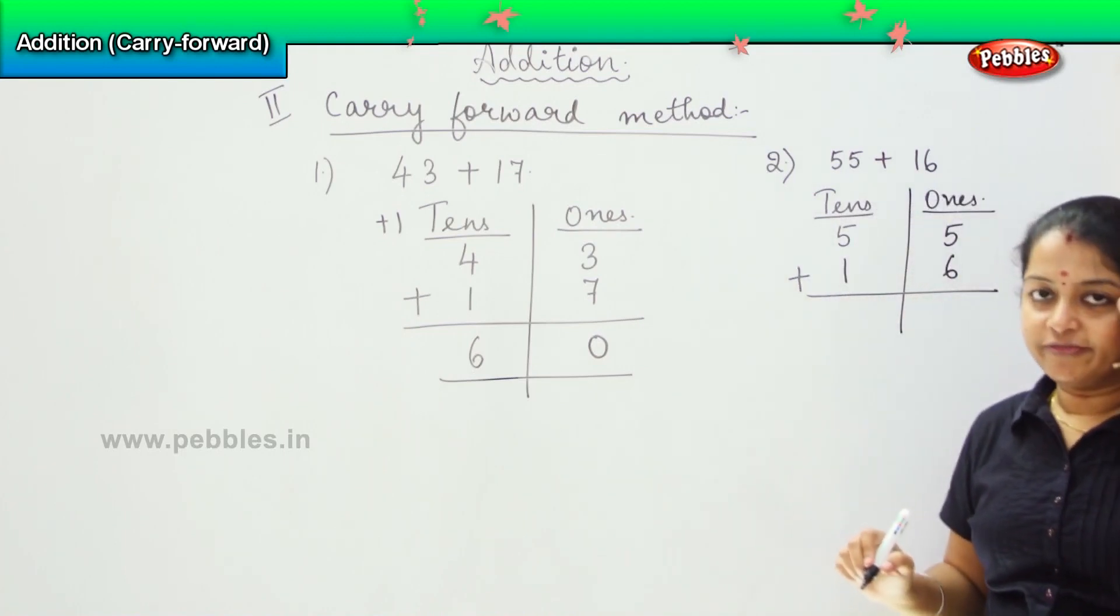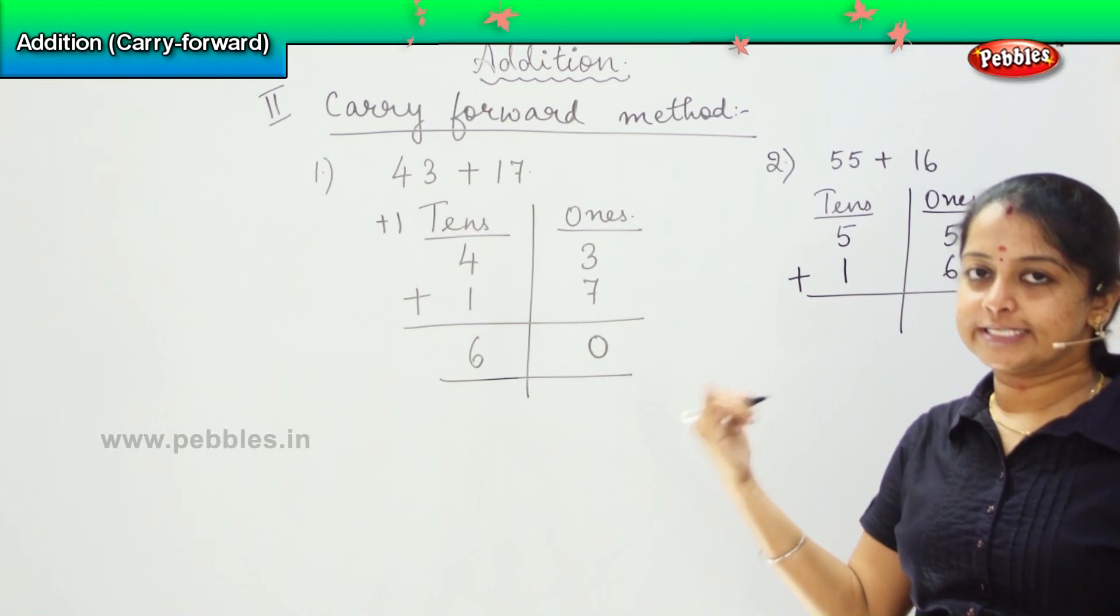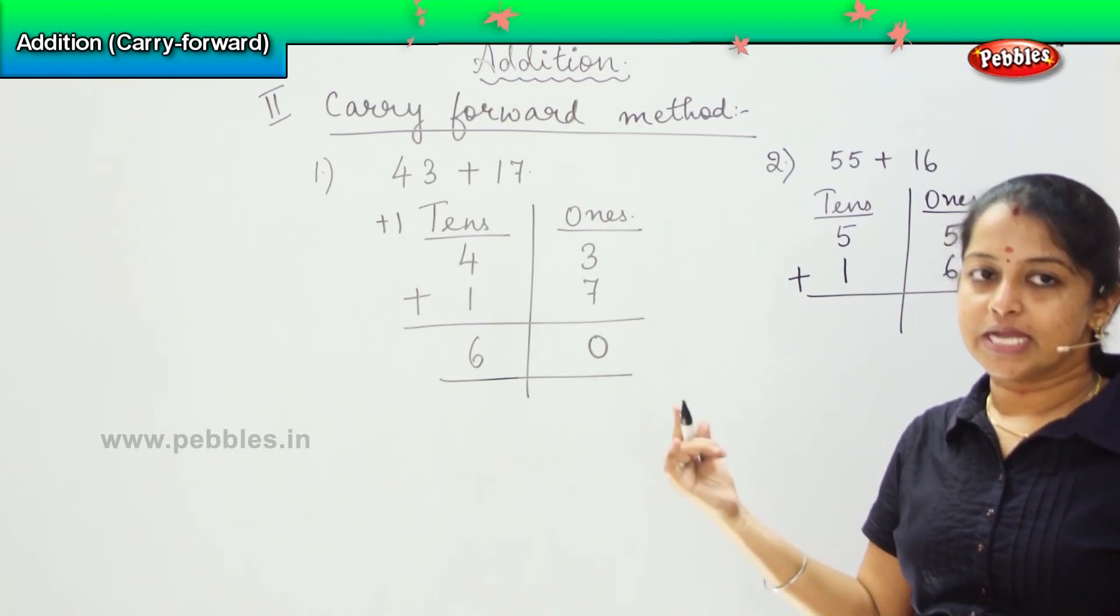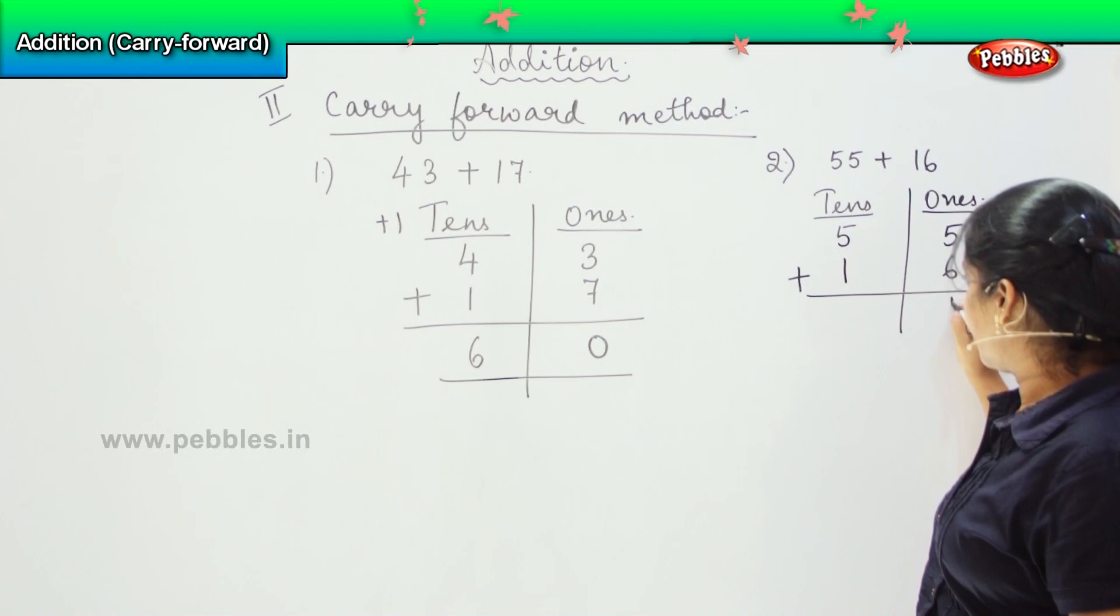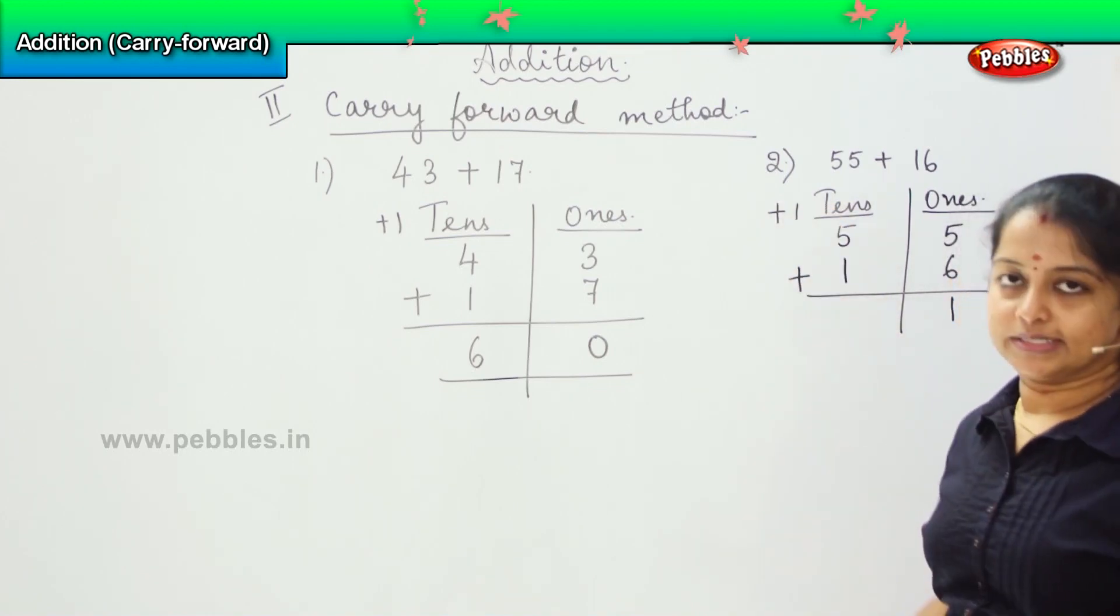So having 5 in the mind and 6 in the fingers. After 5: 6, 7, 8, 9, 10 and 11. So I will write 1 here and 1 I will carry forward to the tens.